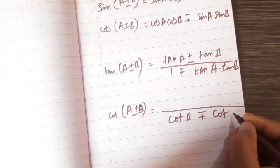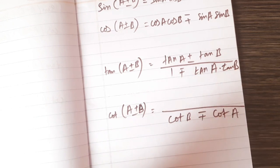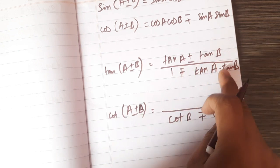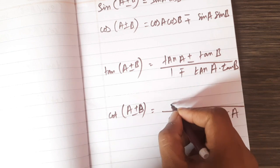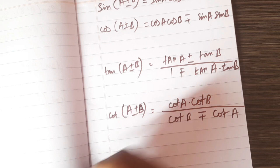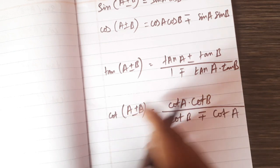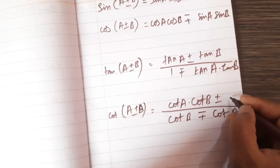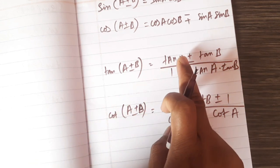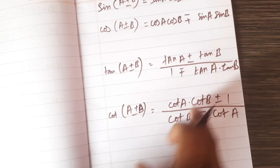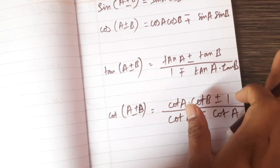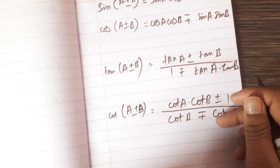The cot formula is the reverse way. Cot(A±B) is equal to cot A times cot B, plus or minus 1, divided by cot B plus or minus cot A. This is the opposite direction. Next we move to more formulas.